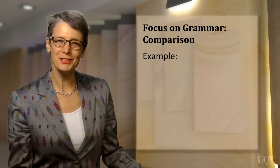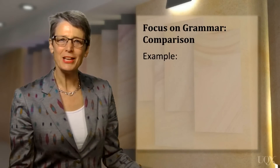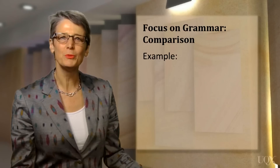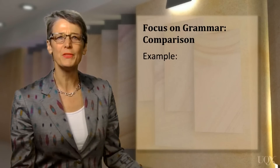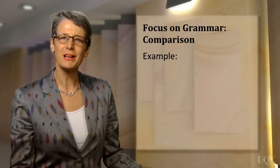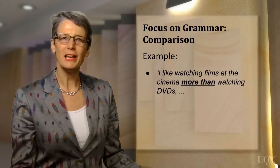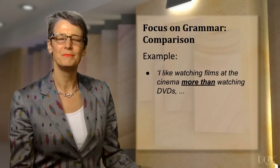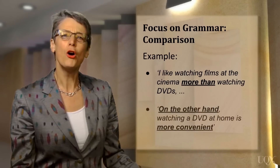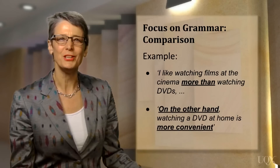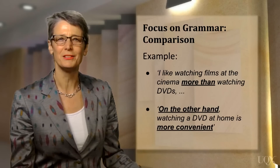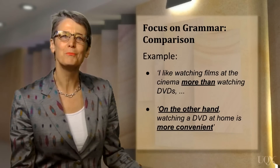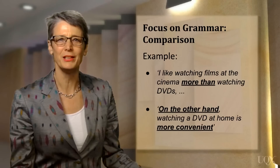As you heard in this example, the candidate used a range of grammatical structures to compare watching a film at home to watching a film at the cinema. For example, he said: 'I like watching films at the cinema more than watching DVDs.' And, on the other hand, 'watching a DVD at home is more convenient.' There are many grammatical structures that you can use to compare people, places or things. Let's look at a few useful ones.